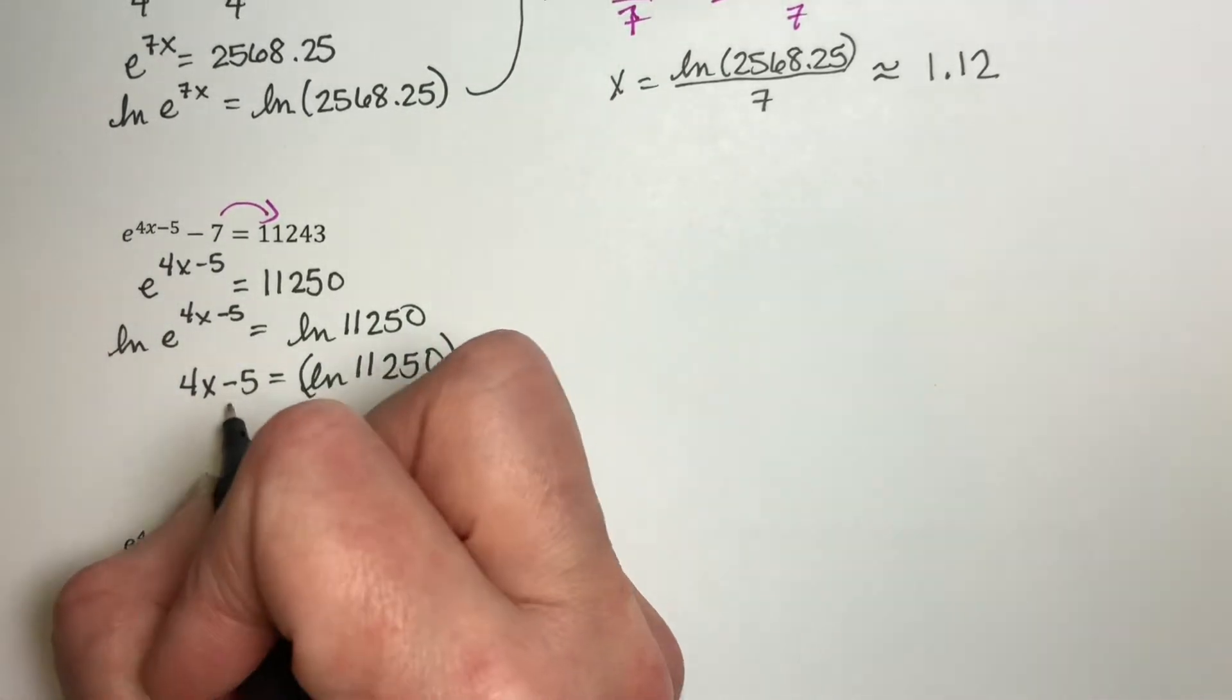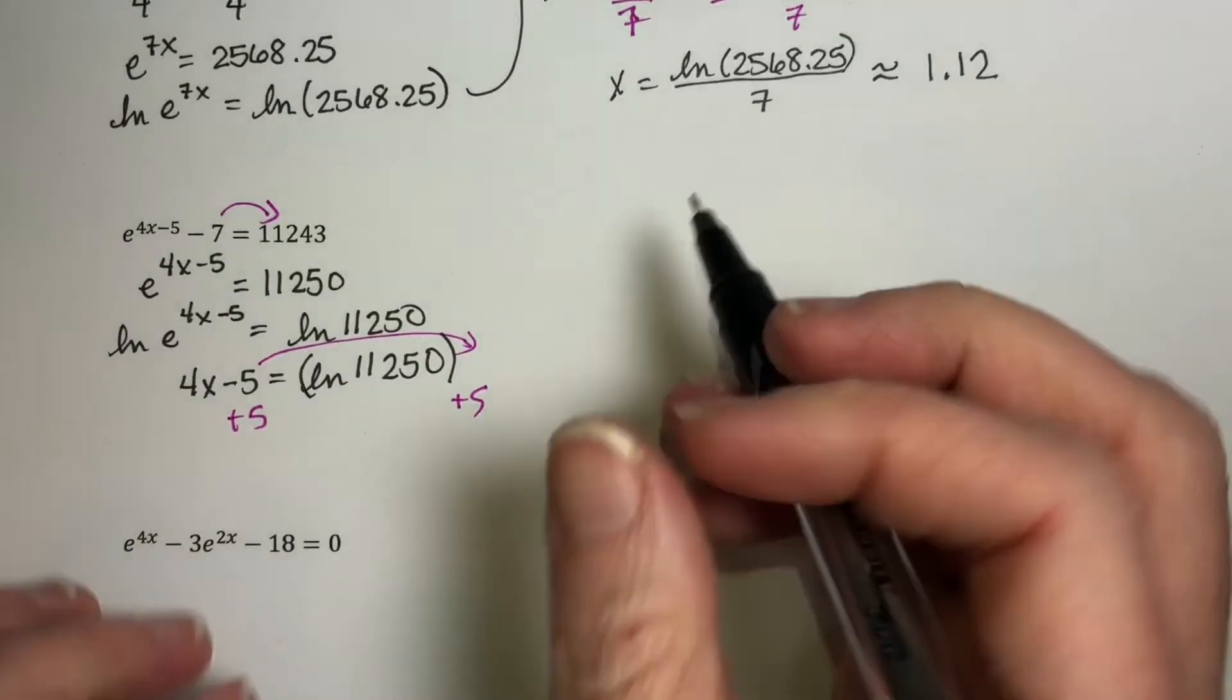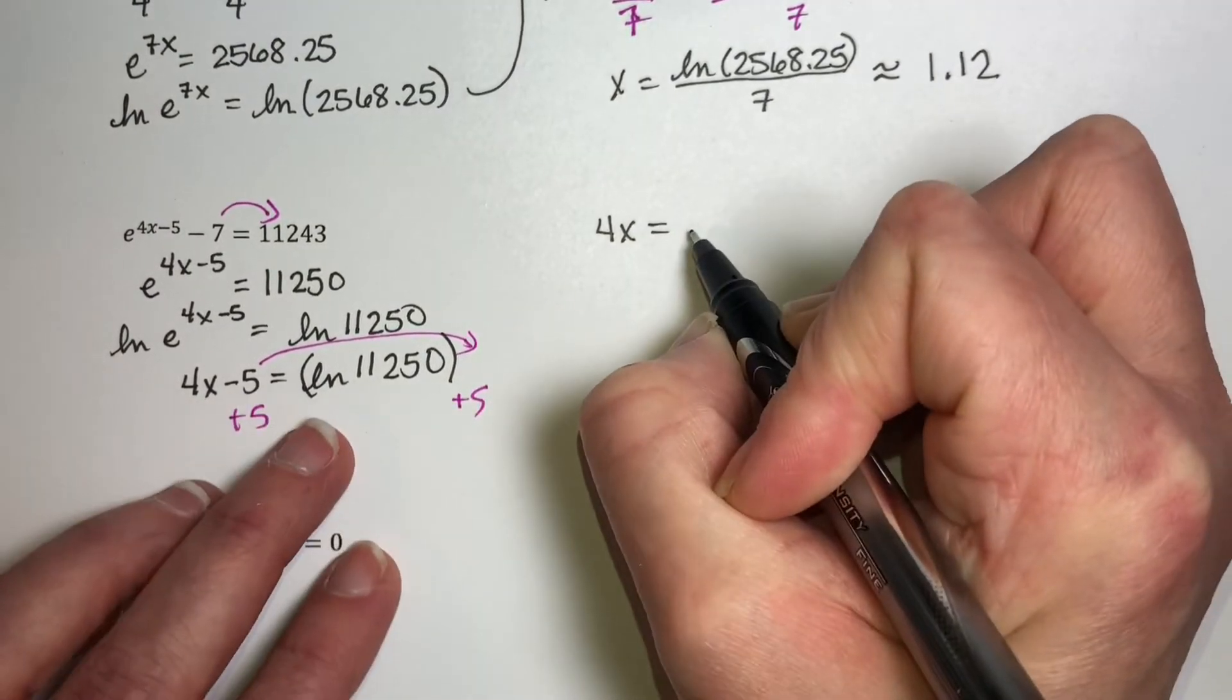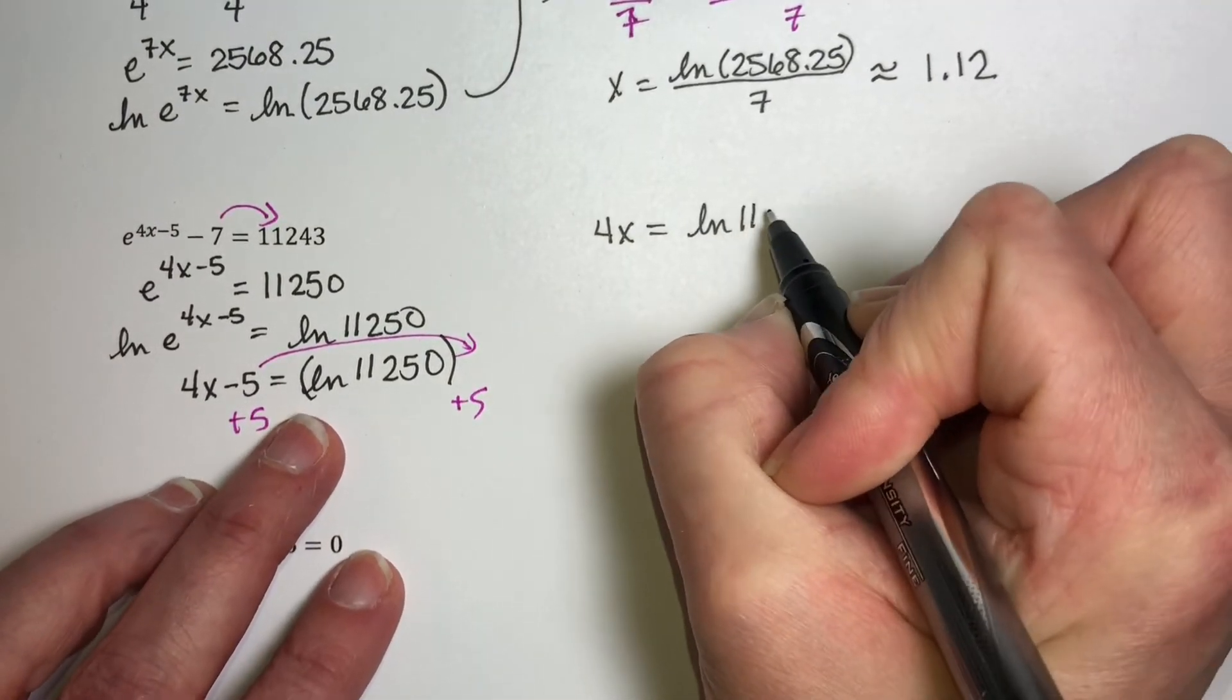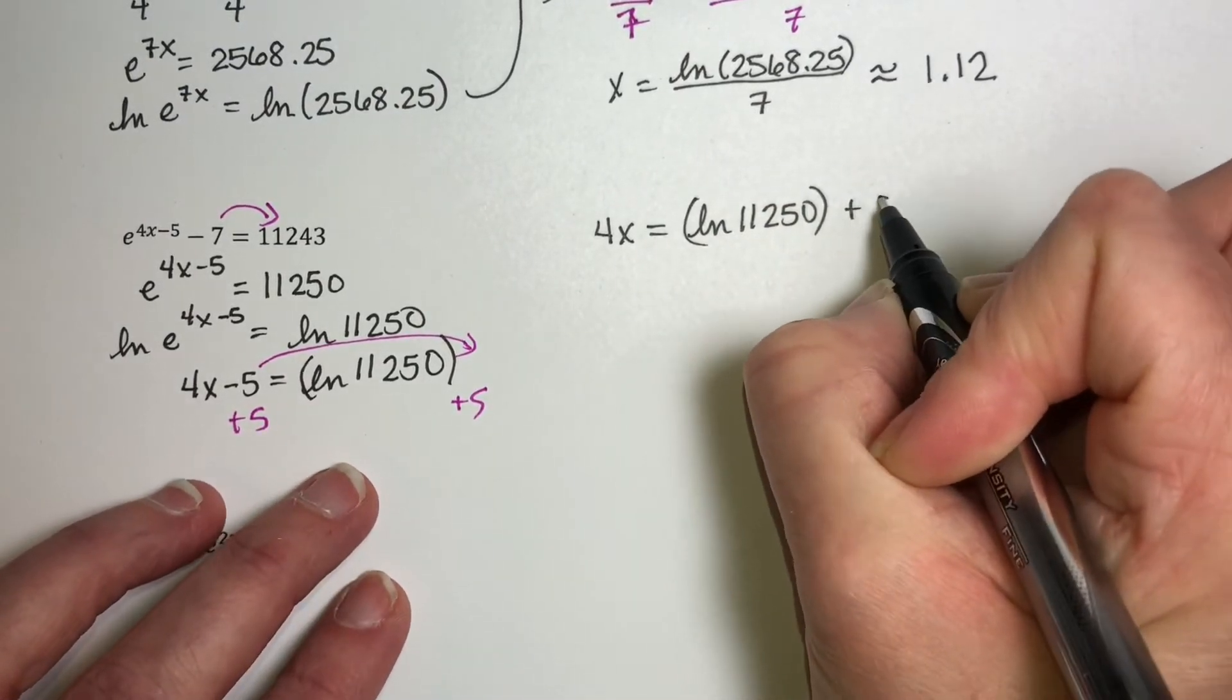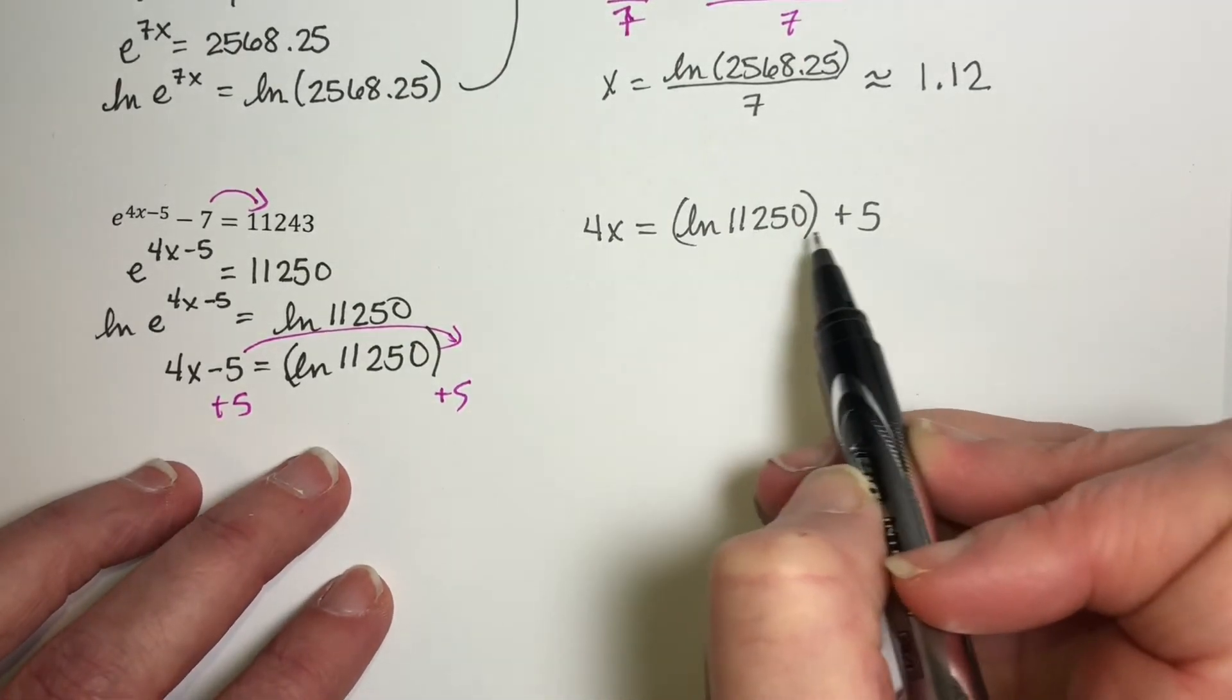So if I move this 5 over to here, what I end up with is 4x equals natural log of 11250 plus 5. This cannot be added to this. That's not one of our properties at all.